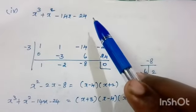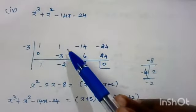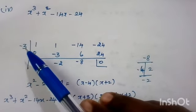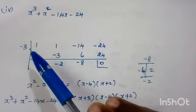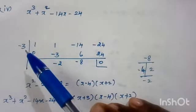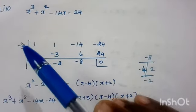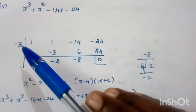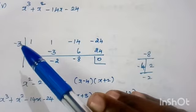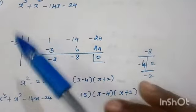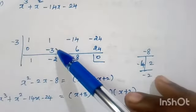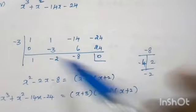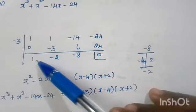Fourth problem: x³ plus x² minus 14x minus 24. Coefficients: 1, 1, minus 14, minus 24. Try 1 — does not give remainder 0. Try minus 1 — also not 0. Try 2 — not possible. Try minus 2 — not possible. Try minus 3: bring down 1, multiply 1 into minus 3 is minus 3, add to 1 gives minus 2, multiply minus 2 into minus 3 is 6, add to minus 14 gives minus 8, multiply minus 8 into minus 3 is 24, add to minus 24 gives remainder 0. So minus 3 works, giving quotient x² minus 2x minus 8.